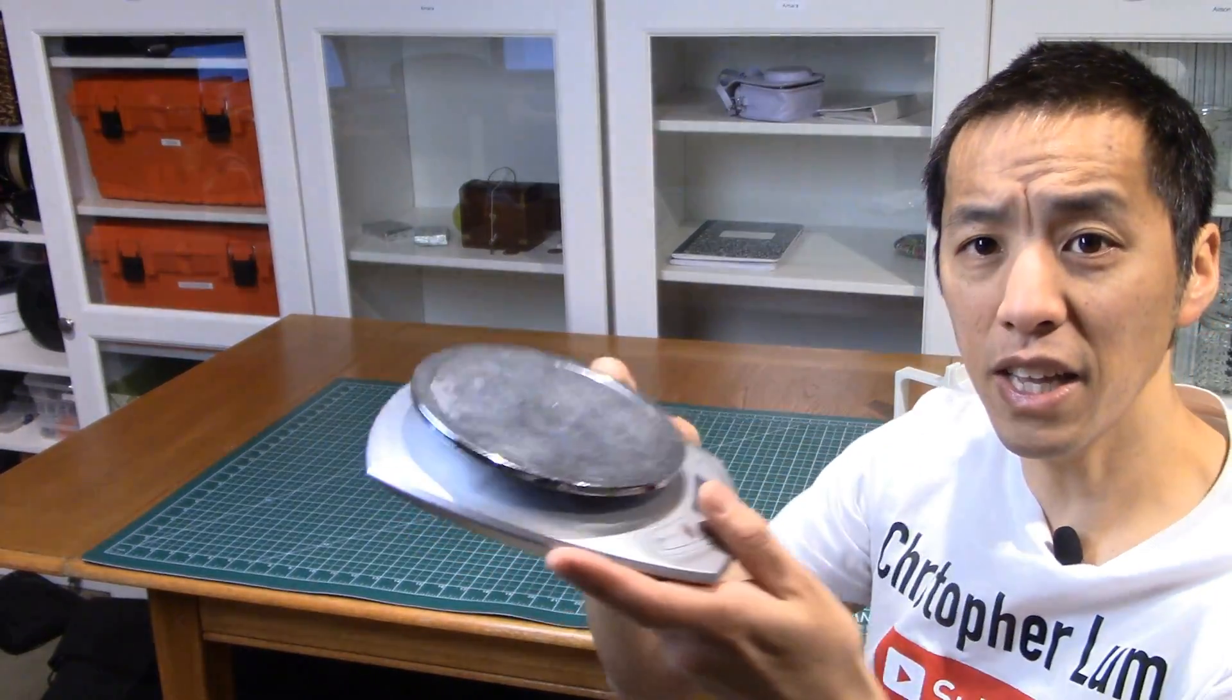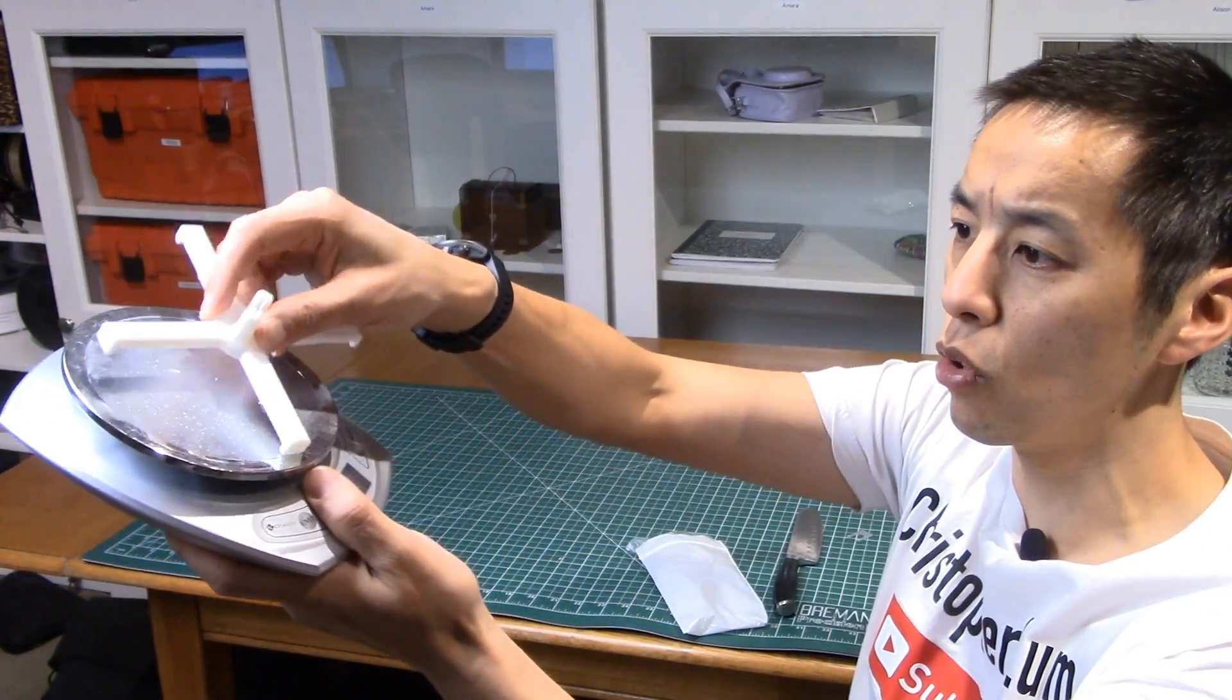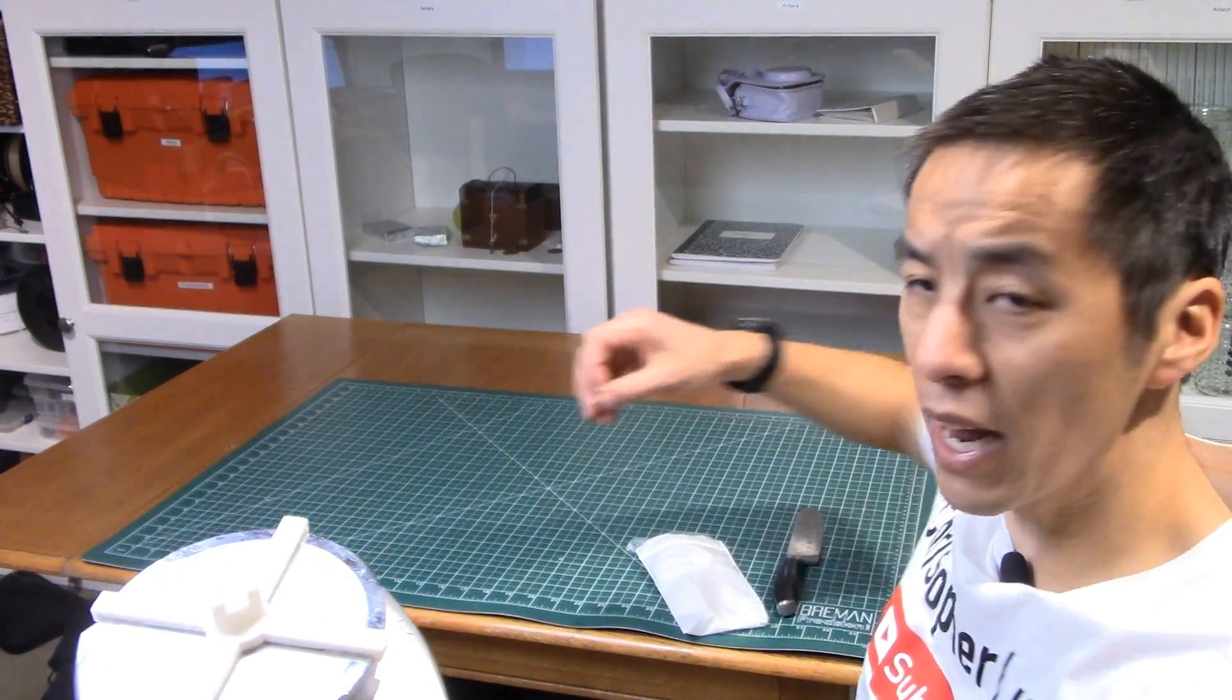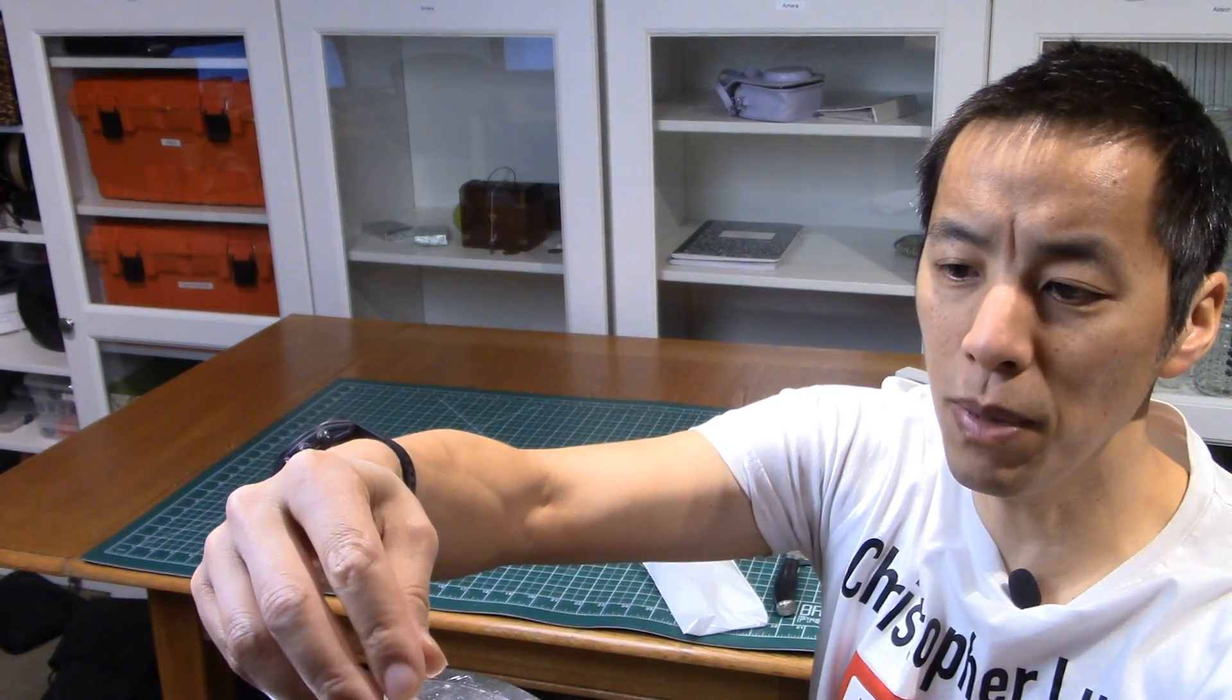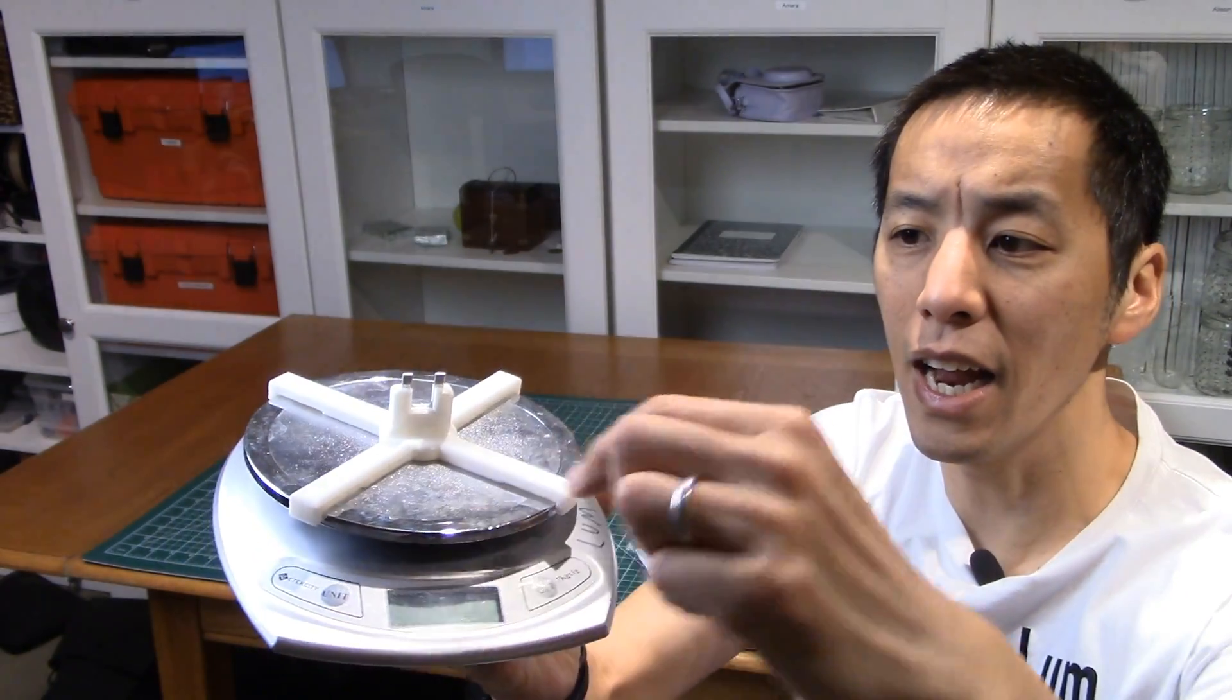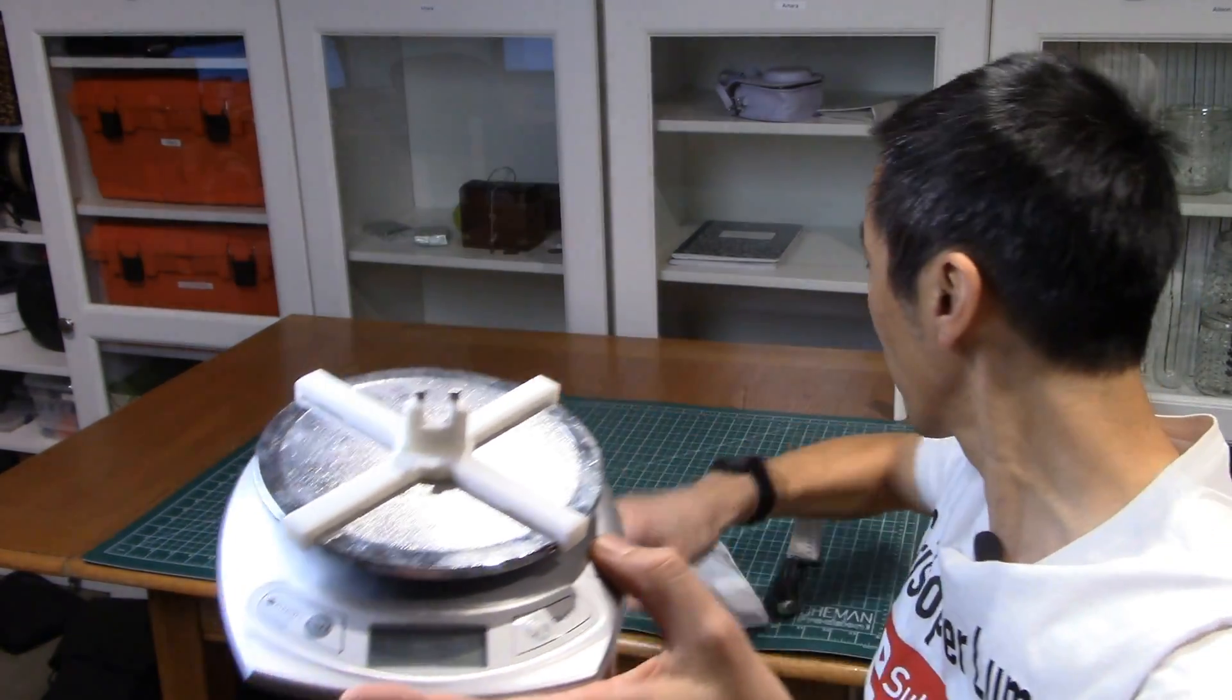By basically taking this kitchen scale, I'm gonna 3D print myself a little holder. So this holder is gonna sit on top of this kitchen scale like that. Then it's got a little slot up here which is the exact right size for this clip, so this test media or this test coupon can go right inside just like that. Now I can measure how much force does it take to cut through this.